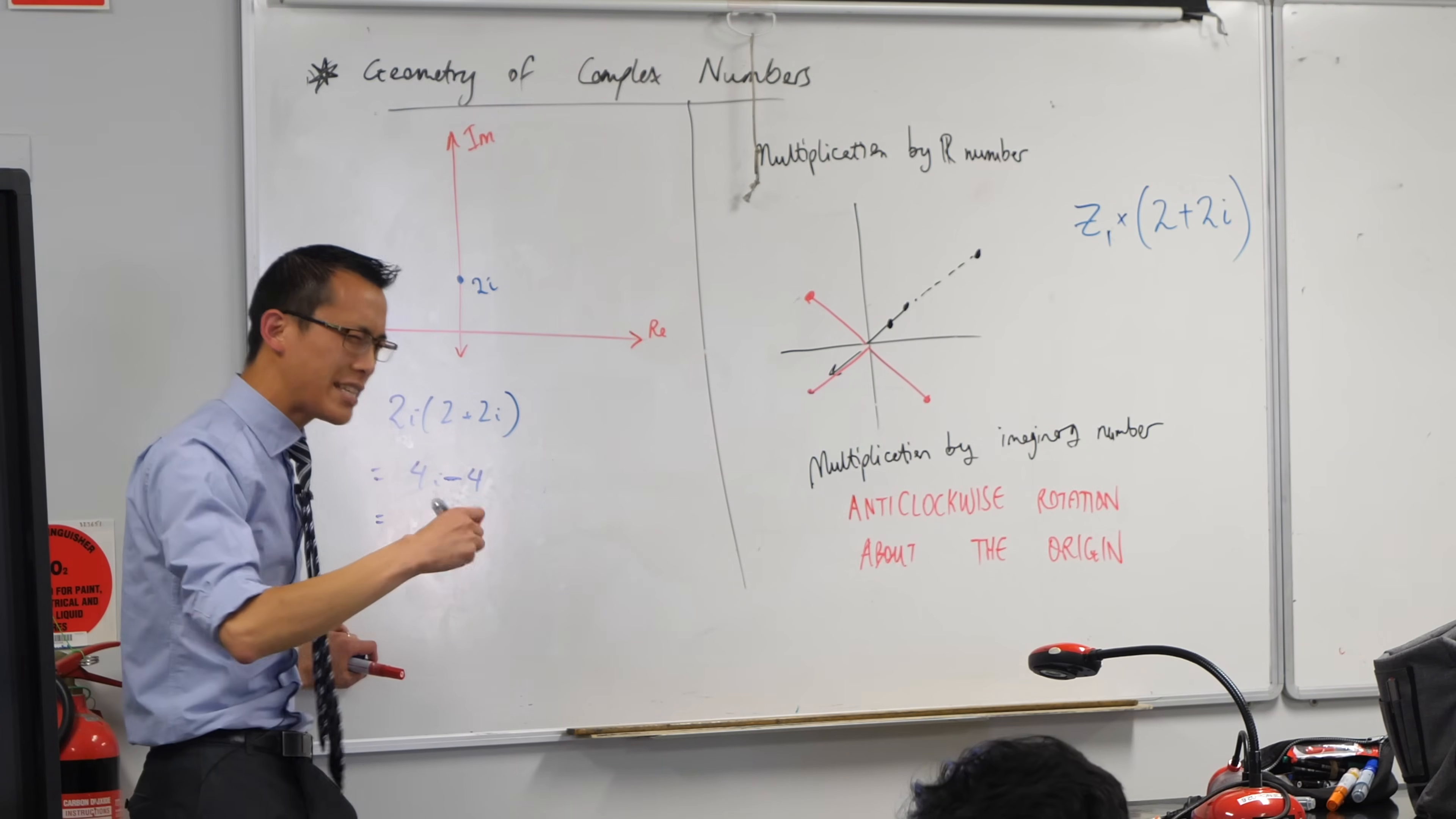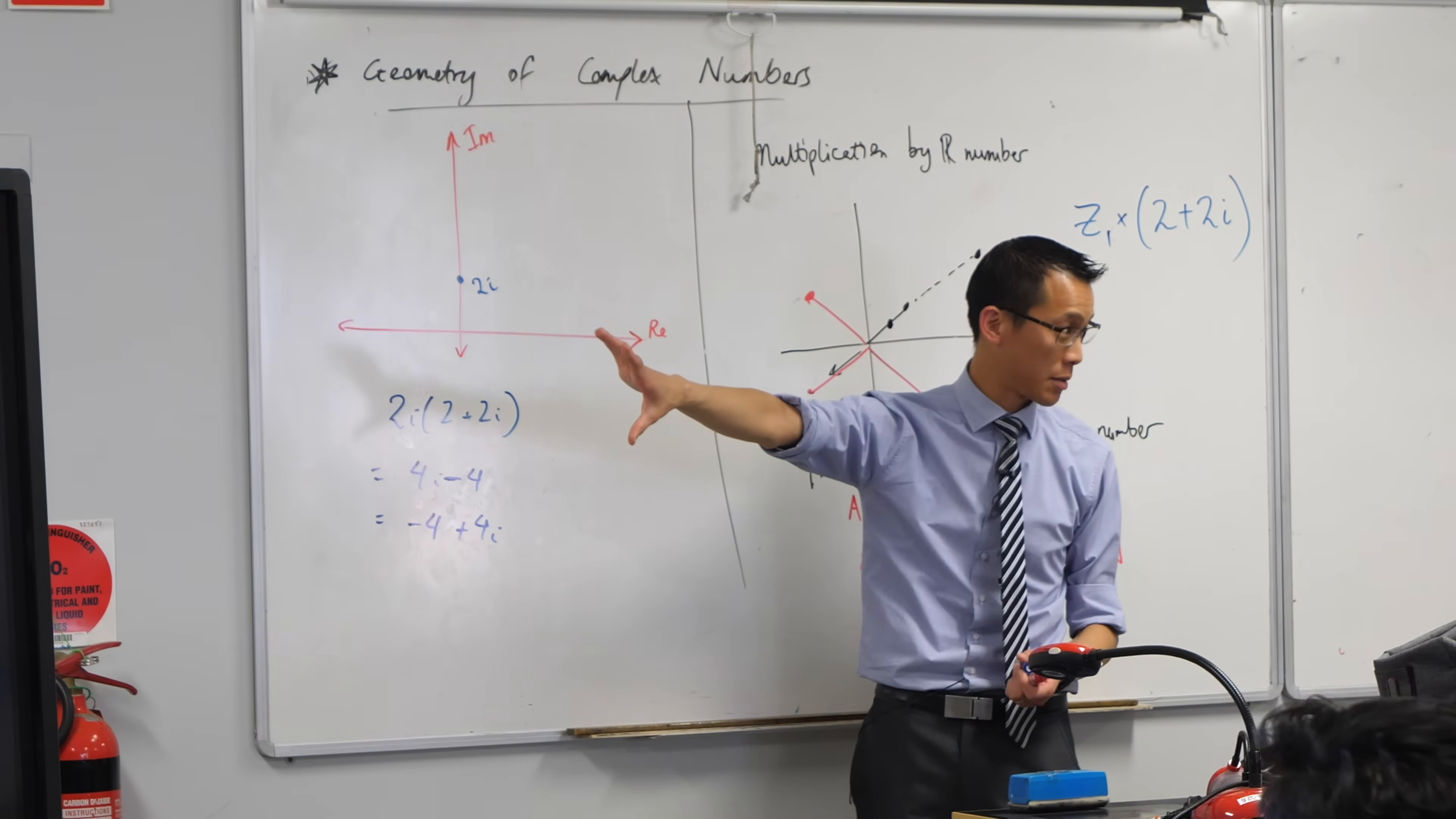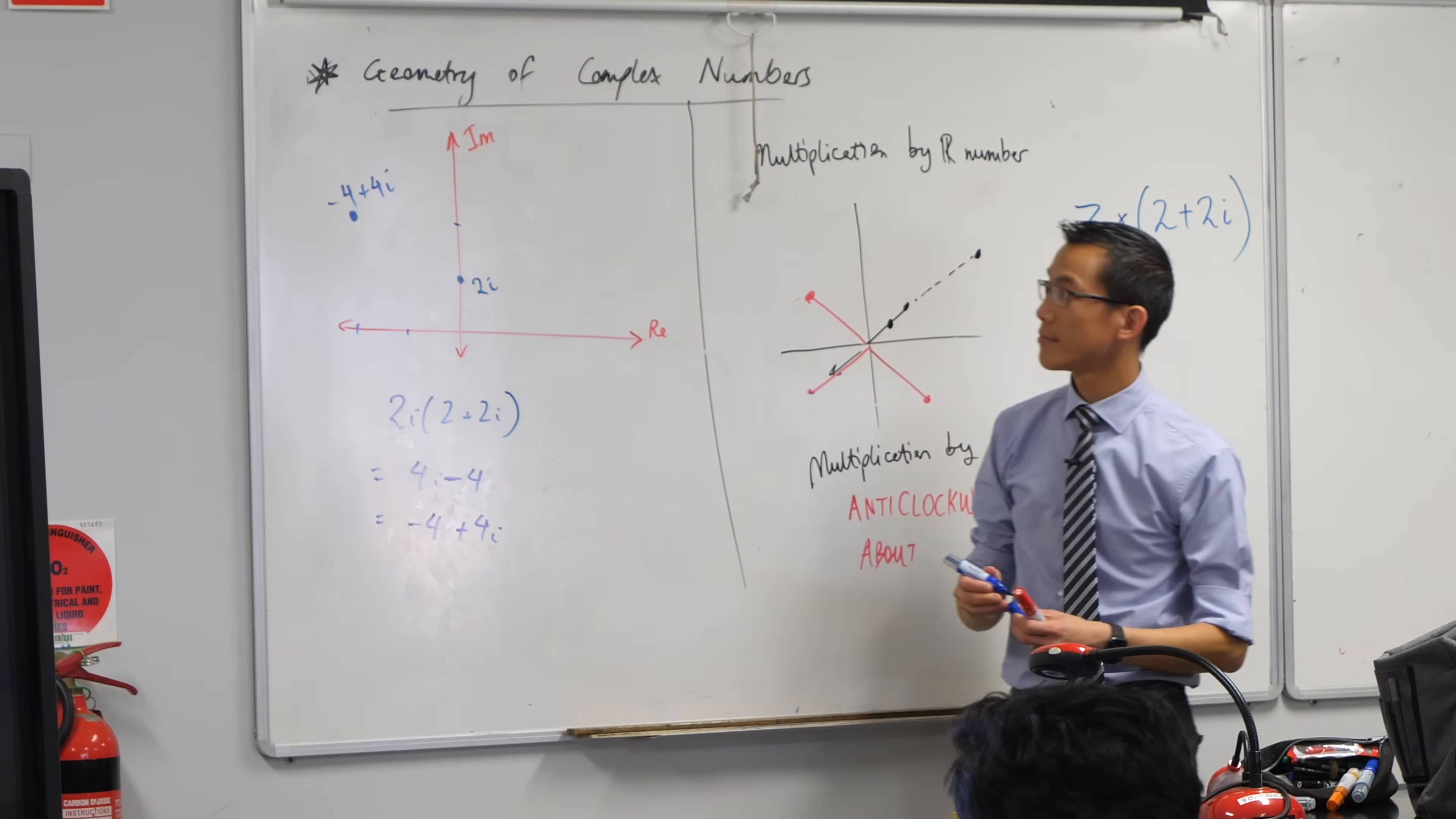So 4i minus 4, we tend to write the number in a different order, even though we generally like, in real numbers, we like subtraction to come next. We've so far been writing it in what order? Real part first, which in this case is negative 4, and then the imaginary part, like so. That helps us as well, especially with doing this stuff on the complex plane, because you can think of them as an x-coordinate and a y-coordinate. So go ahead, and let's put this onto our diagram. Go ahead.